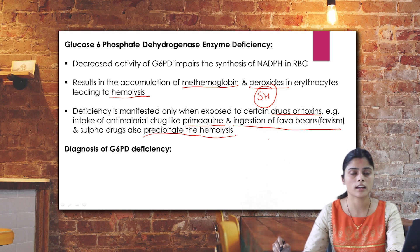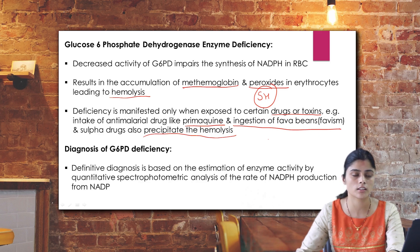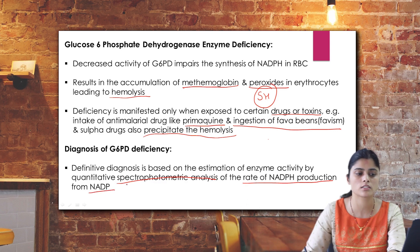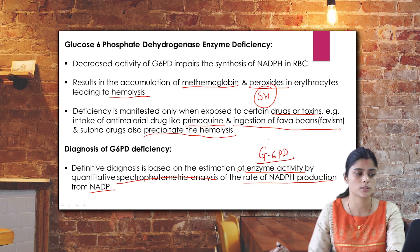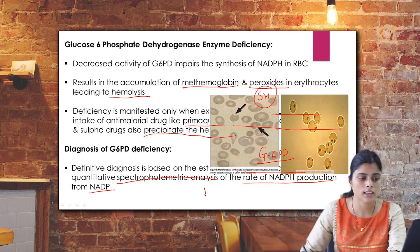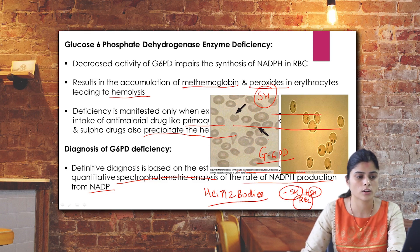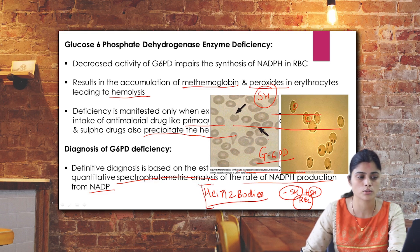G6PD deficiency is diagnosed by exact measurement of glucose 6-phosphate dehydrogenase enzyme activity in the blood, specifically by spectrophotometric analysis measuring the rate of NADPH production from NADP+. A characteristic finding in peripheral blood smears is the presence of Heinz bodies — aggregated disulfide-containing compounds inside RBCs — along with anisopolykilocytosis, giving a typical appearance.